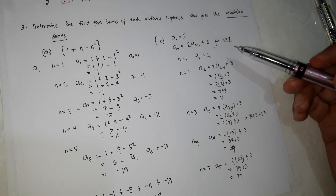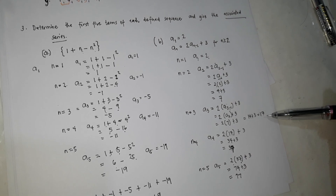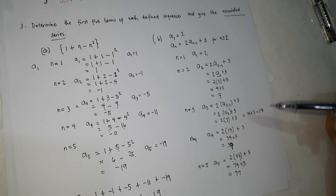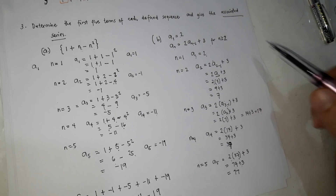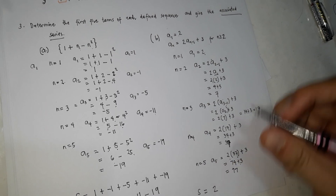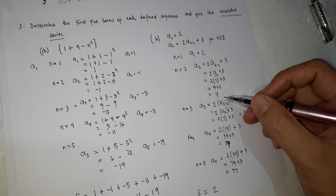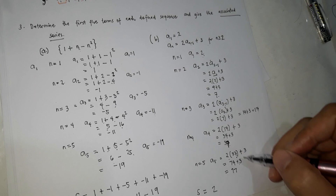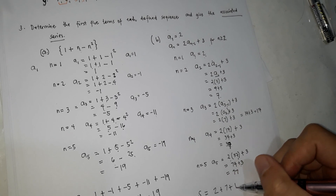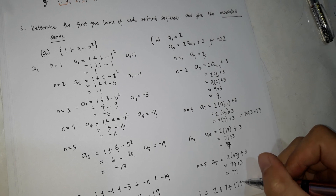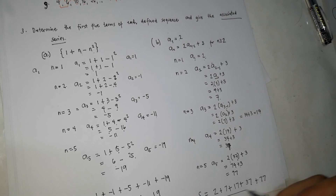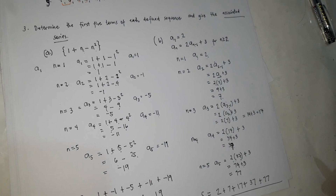So the first five terms are 2, 7, 17, 37, and 77. The associated series is: 2 plus 7 plus 17 plus 37 plus 77.